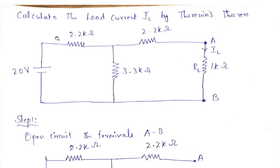In this problem, they ask us to calculate the load current IL using Thevenin's theorem. A 20V voltage source is given, along with resistances including a parallel resistance and a load resistance. As I mentioned, wherever the load resistance is given, you need to mark that point as A and B for simplification. You can use any notation you prefer. So here IL is the load current, and that is what we need to find out.